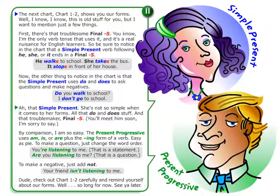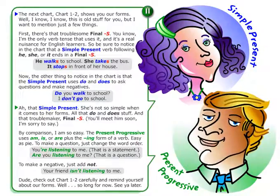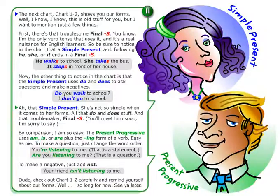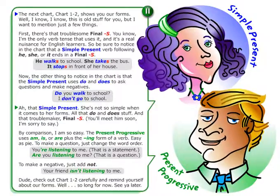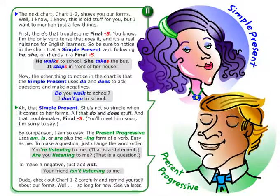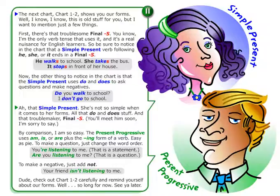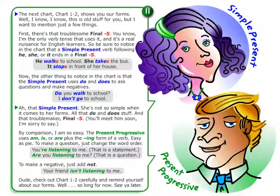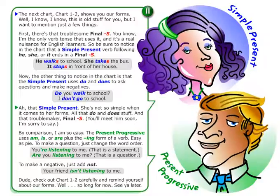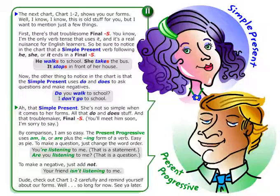You'll meet him soon, I'm sorry to say. By comparison, I am so easy. The present progressive uses am, is, or are, plus the ing form of a verb. Easy as pie. To make a question, just change the word order. You're listening to me — that's a statement. Are you listening to me? That's a question. To make a negative, just add not. Your friend isn't listening to me.